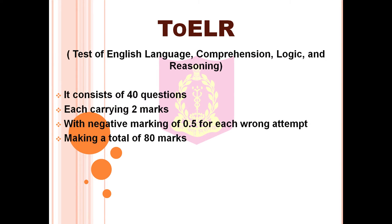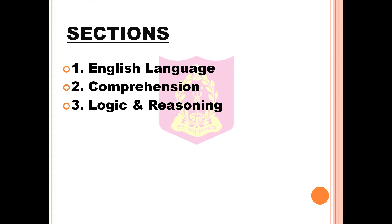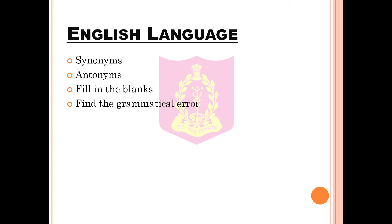TOILER means Test of English Language, Comprehension, Logic and Reasoning. TOILER consists of 40 questions each carrying 2 marks with negative marking of 0.5 for each wrong attempt, making a total of 80 marks. TOILER consists of the following sections: English Language, Comprehension, Logic and Reasoning. The questions are asked in a random pattern, but they have been divided section-wise for better understanding. Now let's move to the first section: English Language.